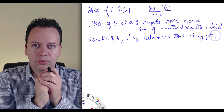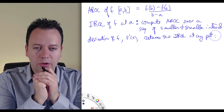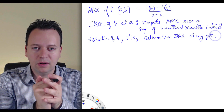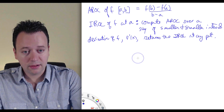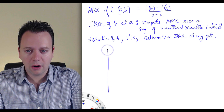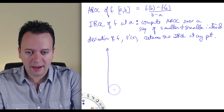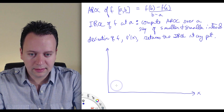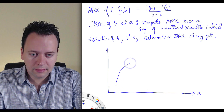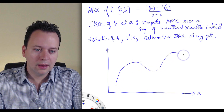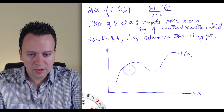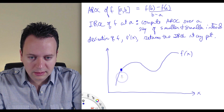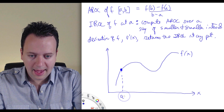Right now we're going to compute and understand the derivative in relationship to the tangent line. For this, we want to draw our generic graph — there's x and there's f of x. Maybe we're at some point right here, and this is the value a.